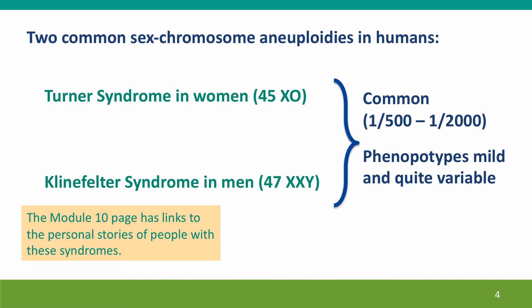I don't have pictures of these people to show you, and I don't want to show you the kind of clinical genetics textbook pictures that you sometimes see. What I strongly recommend is that you go to the module 10 page, look at the resources and readings list, and you'll find links to writings by people who actually have these syndromes — people with Turner, people with Klinefelter syndrome — writing about their lives.